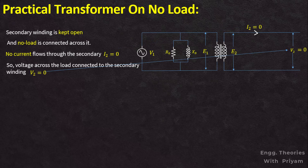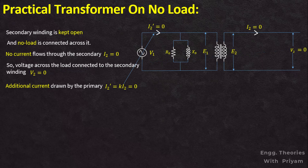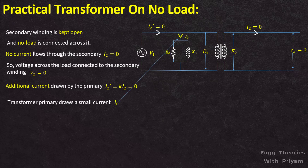As the current in the secondary winding I2 is zero, the magnetomotive force in the secondary winding is also zero, so no extra current will flow in the primary winding to neutralize the demagnetizing effect of the secondary current. The additional current I2-prime, which is K·I2, is also equal to zero. So the primary winding will draw a very small current, and the secondary winding is not causing any effect on the magnetic flux set up in the core. The primary winding will draw a very small current I₀ from the supply, which flows through the shunt branch made of reactance and resistance.